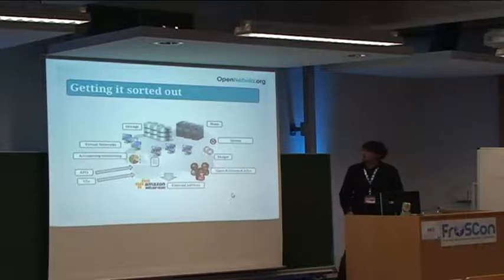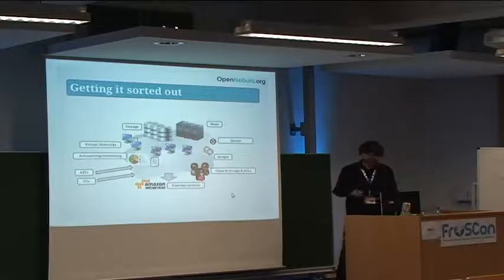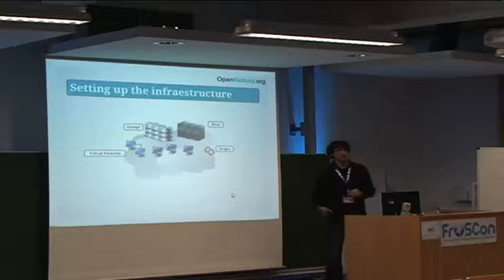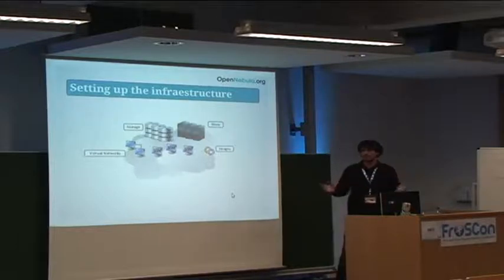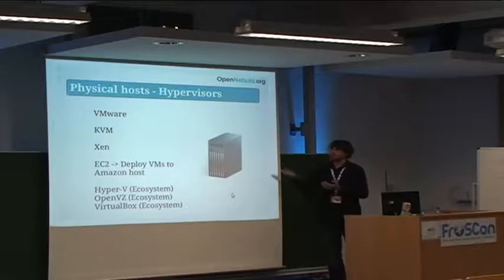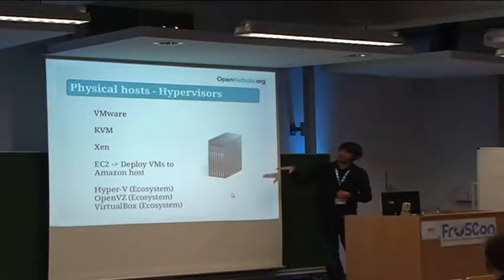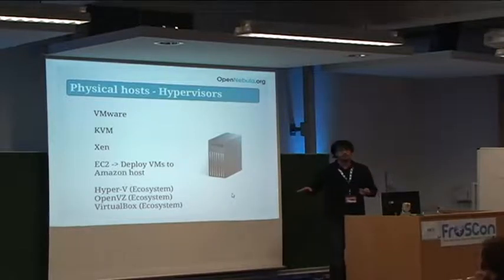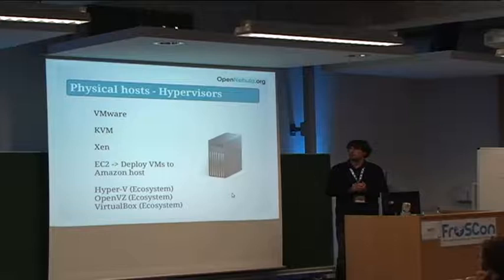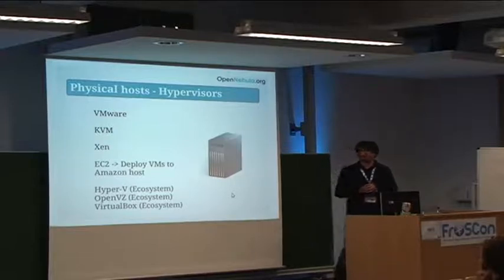When we want to build the cloud, we first look at how we put together the infrastructure. The first thing we have is a set of physical hosts on which we will run the virtual machines. In order to virtualize on those hosts, we can use many hypervisors. The ones supported in OpenNebula include four that come in the box, with others available in the ecosystem where external contributions to the project are placed. VMware is listed first not because it is especially good, but because we aim to give the best support to virtualization on VMware without having to pay for expensive VMware-specific cloud solutions.